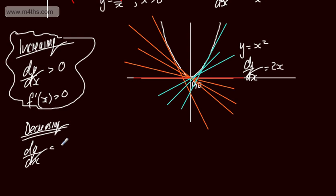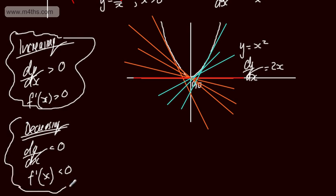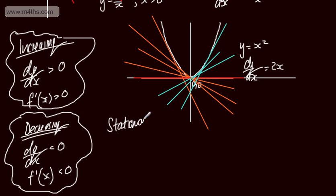For a decreasing function, the derivative dy/dx is going to be less than 0 — or f'(x) less than 0. For a stationary point — and I'm not using the term turning point in all cases, for a reason we'll see in the next video — the gradient is equal to 0, so dy/dx equals 0, or f'(x) equals 0.